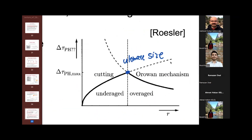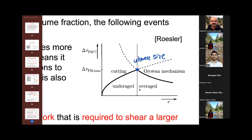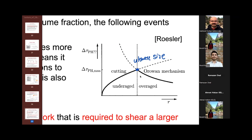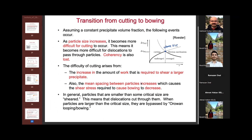This is the whole idea of precipitation strengthening. We have underage and overage regimes. For underage particles we have Orowan looping — this is the ultimate size at which we can get maximum stress due to precipitation hardening. If you increase the particle size too much, you reduce the coherency and start losing your additional strength.